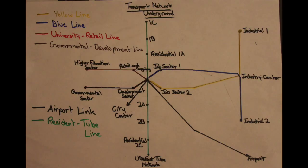The number of metro stops for each sector was determined by the need to travel there and the size of the sector itself. Therefore, there are six metro stops within the residential sector. All metros will stop at the city center because it is the transport hub for the entire city. There will also be metro links to and from the airport and the ultra-fast tube network. There is a legend for the names of each metro line to the left of the map, and all black dots with black text signify metro stops.